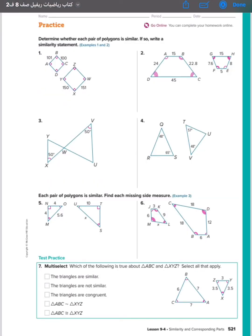Let's see our course. Determine whether each pair of polygons is similar. If so, write a similarity statement. We say if there is similar, we must find first that corresponding angles are congruent, and corresponding sides are proportional. So we have angles and sides.